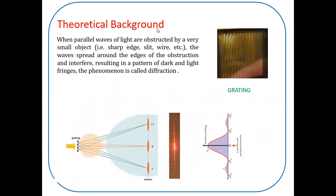Theoretical background, it is based on diffraction. When parallel waves of light are obstructed by a very small object, that is, sharp edge, slit, wire, etc., the waves spread around the edges of the obstruction and interfere, resulting in a pattern of dark and light fringes. The phenomenon is called diffraction.